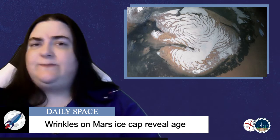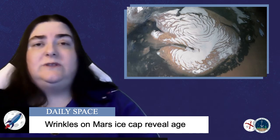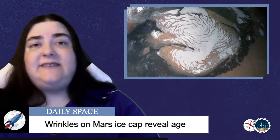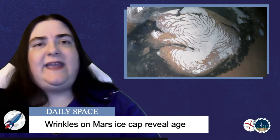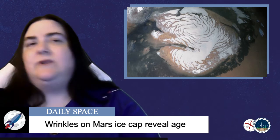This research gives us another piece of the climate change puzzle for Mars and will hopefully lead to an understanding of when these changes happened. In this case, the wrinkles on the ice cap give an age of about 1,000 to 10,000 years. Not old at all, but we need more data.